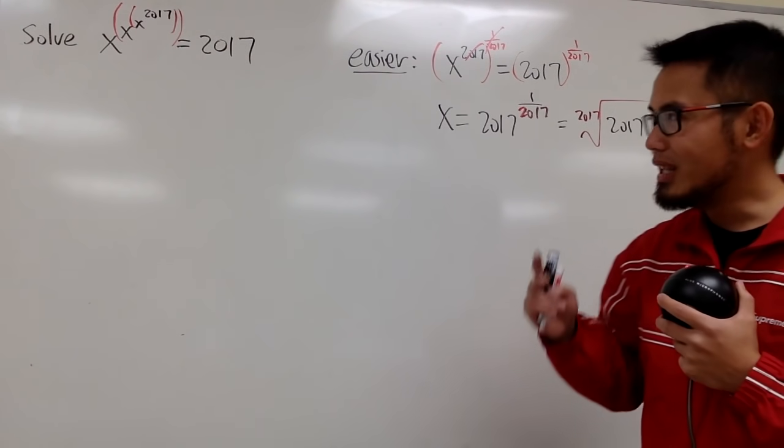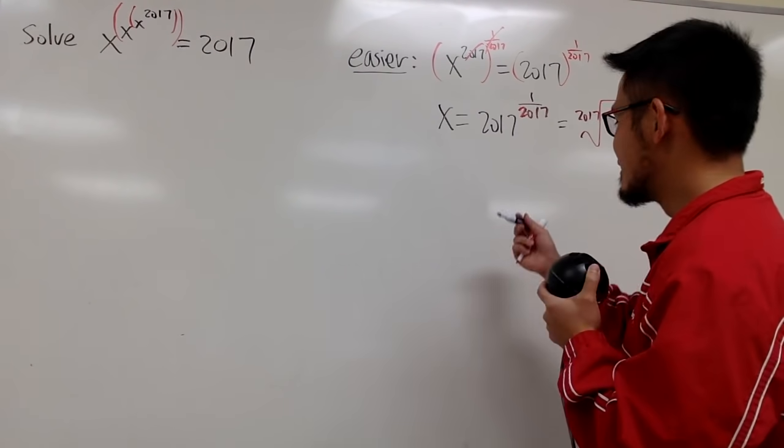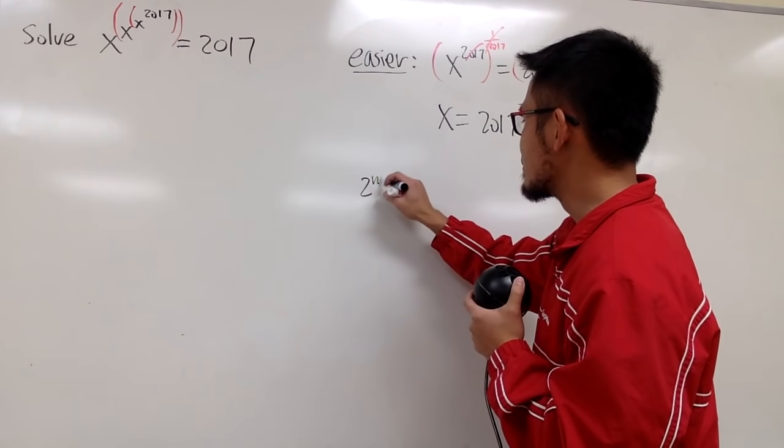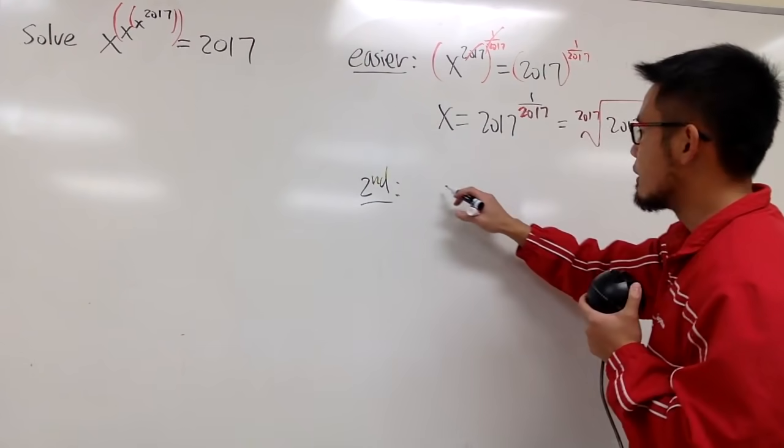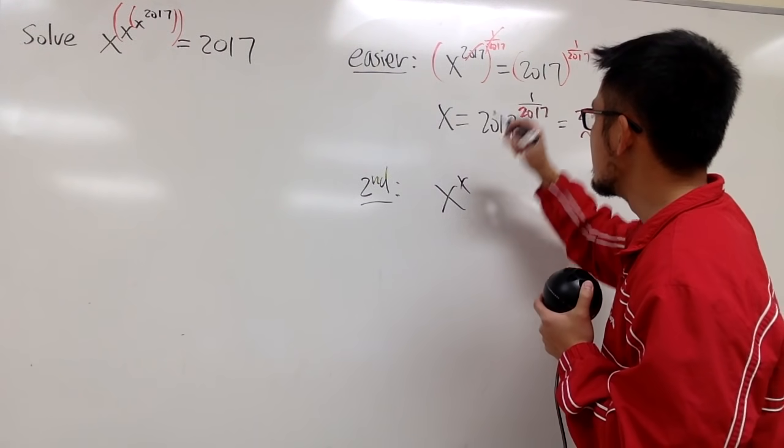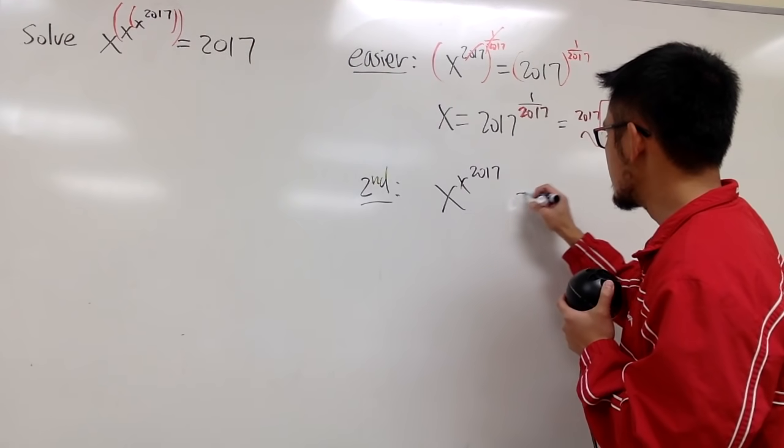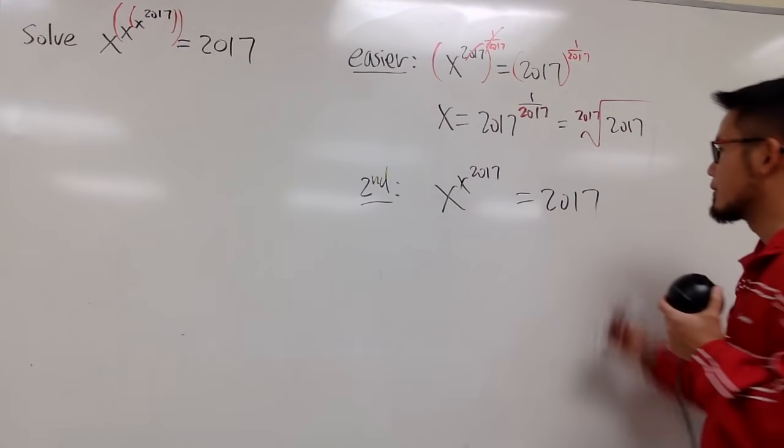Now, let's try if we have two x's. So this is the second easiest version. Let's solve x to the x to the 2017th power, and I still want this to be 2017.